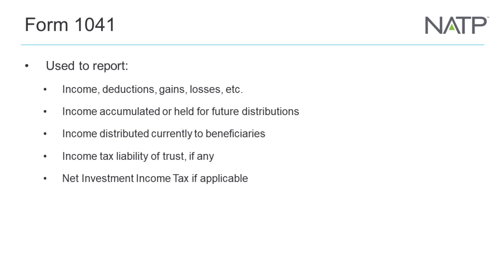That is the function of the K-1, and it's a good thing tax-wise when that tax liability is transferred to an individual, because trusts are taxed at much higher rates. The rate schedule for trusts is severely compressed — with just a small amount of income, a trust may be in the 35% or 37% tax bracket.